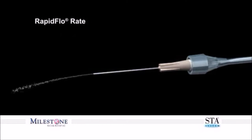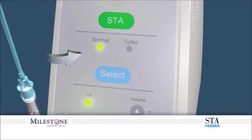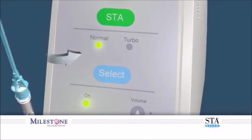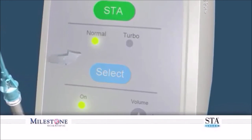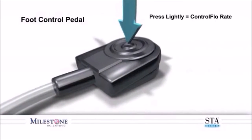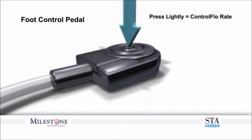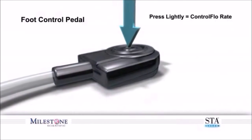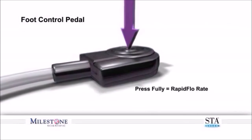In the normal mode, the foot control has two distinct positions. Depressing the foot control lightly allows you to enter the controlled flow rate. Fully depressing the foot control allows you to enter rapid flow rate. It is recommended that you use the foot control.